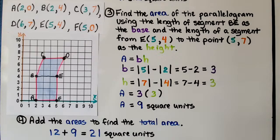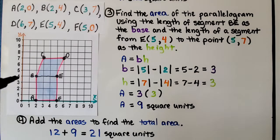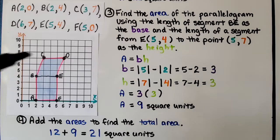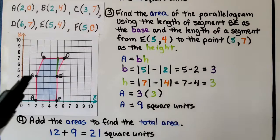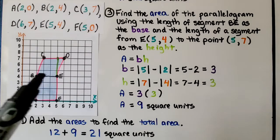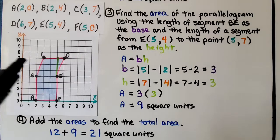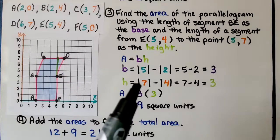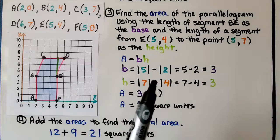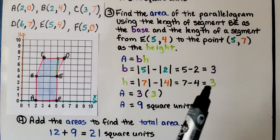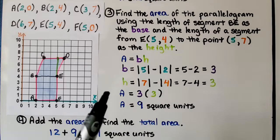For the height, it's a little trickier. We're going to use a line segment from E, which is at (5, 4), and bring it up to the point at (5, 7). The X values are the same, so we use the Y values: the absolute value of 7 minus the absolute value of 4 is 7 minus 4, which is 3. We multiply base times height and get 9 square units.